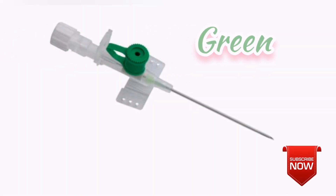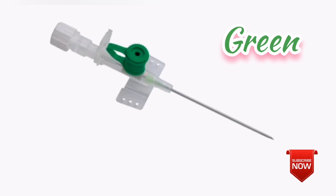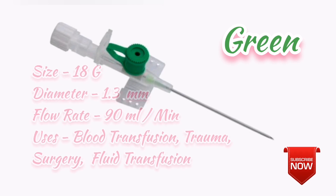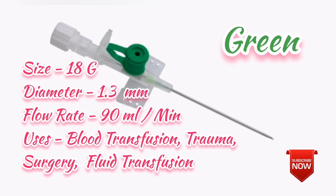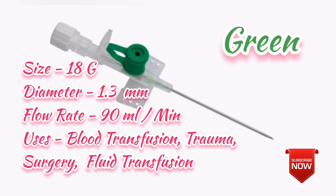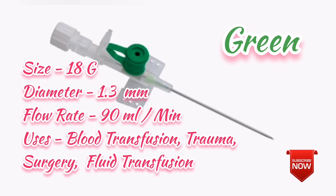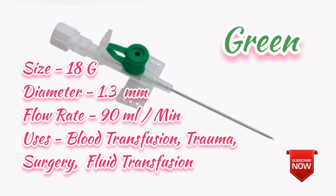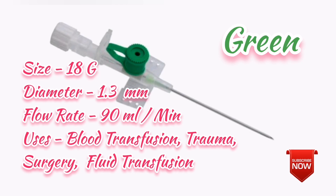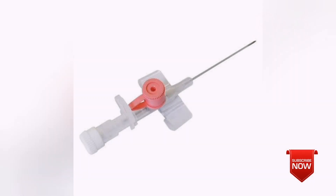The next color is green. The size is 18G. The diameter is 1.3 mm. The flow rate is 90 ml per minute. The use of this is normal blood transfusion, normal IV transfusion, medicine or IV infusion. It is commonly used in the adult group.